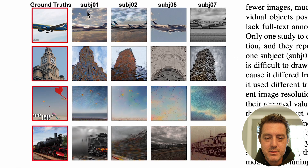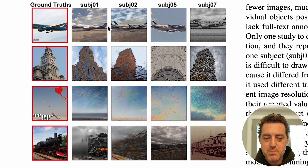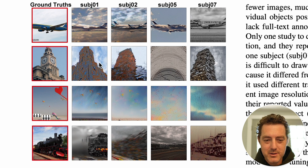Here are some more examples showing ground truths. These are from different subjects — read from different people's brain activity — and you can see all of them are somewhat similar.